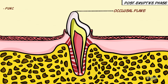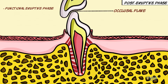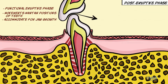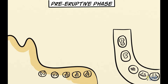The post-eruptive phase, also called the functional eruptive phase, begins when teeth are in occlusion. The movements in this phase maintain positions of the erupted teeth by accommodating for continued jaw growth and compensating for any proximal or occlusal wear of teeth. Movements of the tooth germs in the pre-eruptive phase are preparatory for the eruptive phase and place them in a position for eruption.